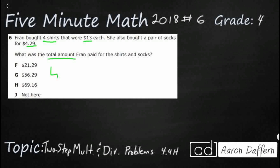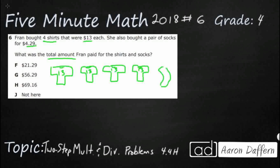So if I were to draw a picture — let's pretend these are my shirts here, and I've got four of them. They're going to be $13 each. I'm just going to make them look kind of like tees. It doesn't really matter what they look like as long as you can visualize what we have. So we've got four t-shirts at $13 each, and then a pair of socks — I'll draw something that looks like stockings, two of them right there.